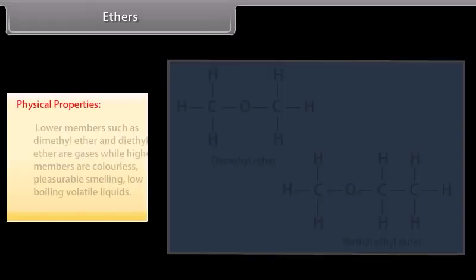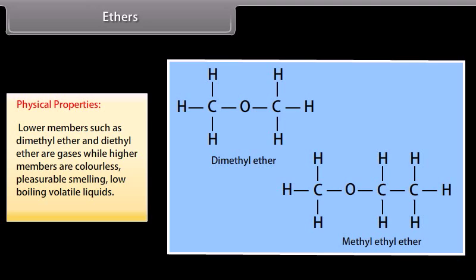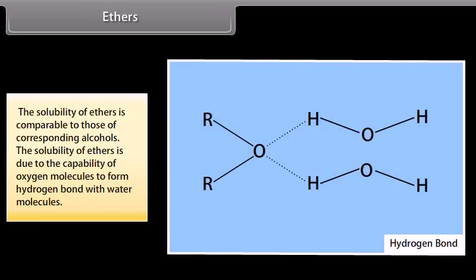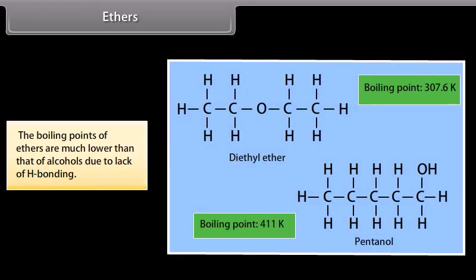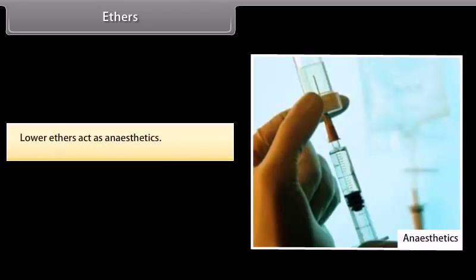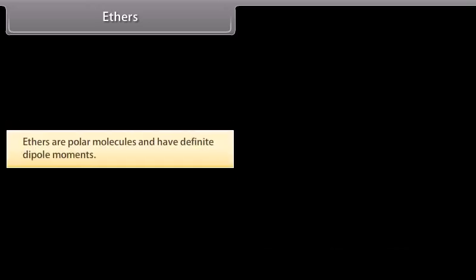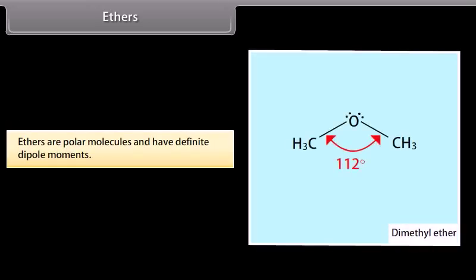Physical properties: lower members such as dimethyl ether and diethyl ether are gases, while higher members are colourless, pleasant-smelling, low boiling volatile liquids. The solubility of ethers is comparable to those of corresponding alcohols. The solubility of ethers is due to the capability of oxygen to form hydrogen bonds with water molecules. The boiling points of ethers are much lower than those of alcohols due to lack of hydrogen bonding. Lower ethers act as anesthetics. Ethers are polar molecules and have definite dipole moments.